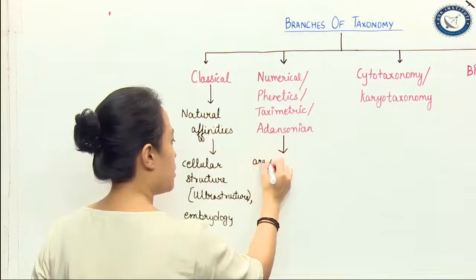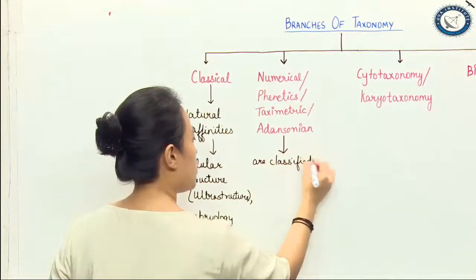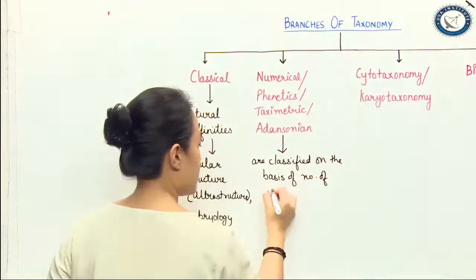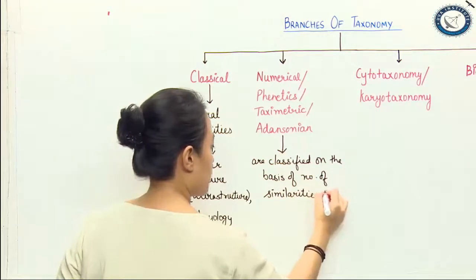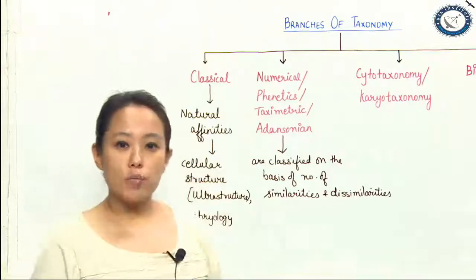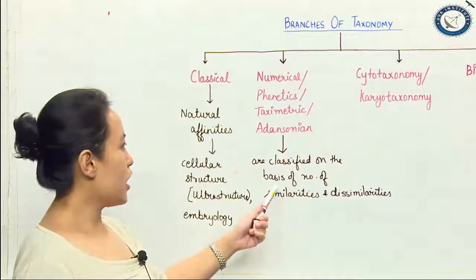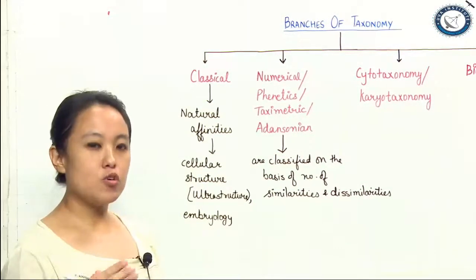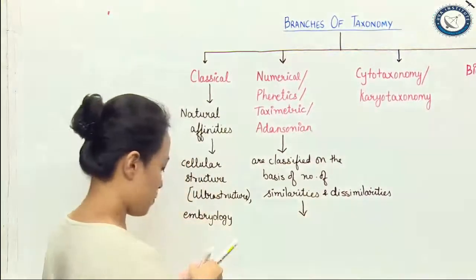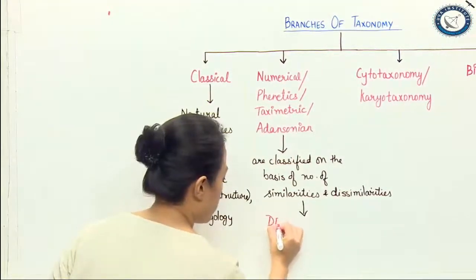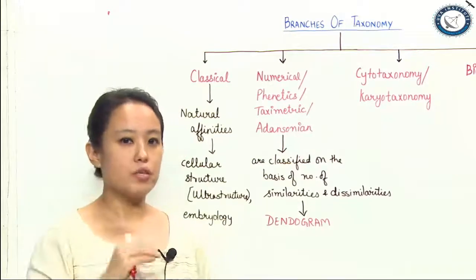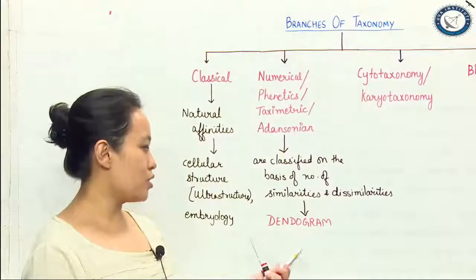When organisms are classified on the basis of number of similarities and dissimilarities, the branch of taxonomy that deals with this is numerical or phenetic taxonomy. When a chart is prepared on the basis of number of similarities and dissimilarities, that chart is known as a dendogram.